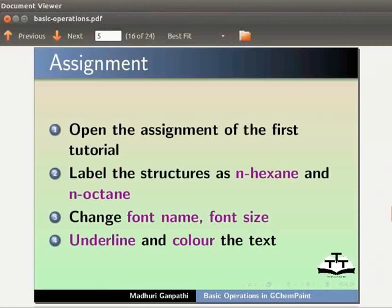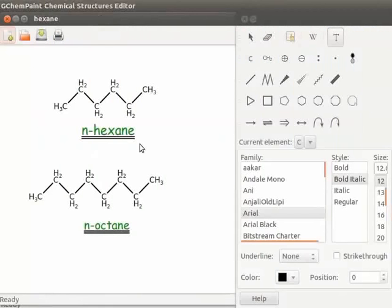Here is an assignment for you. Open the assignment of the first tutorial. Label the structures as n-hexane and n-octane. Change font name, font size, underline and color the text. Your completed assignment should look like this.